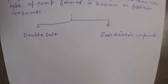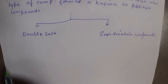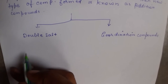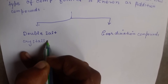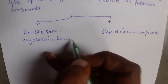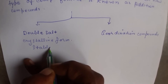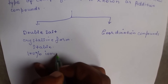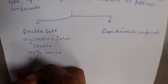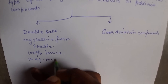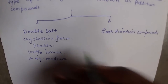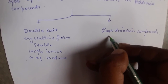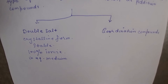What are double salts? Double salts are addition compounds which are stable in crystalline form only. They are 100% stable in crystalline form.